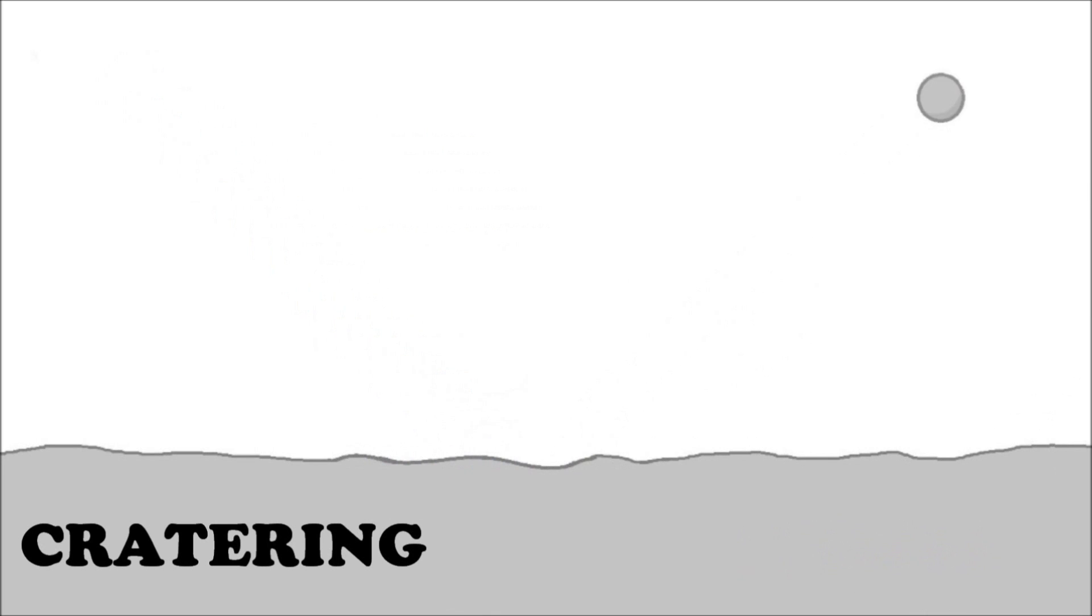As you can see here cratering happens when a water droplet hits the melt stream. This forces out a melt droplet which will eventually solidify into a particle. Keep in mind that water droplets evaporate due to the high temperature of the melt stream.